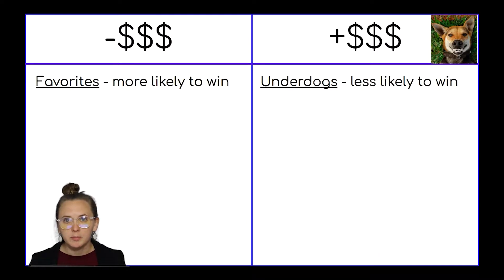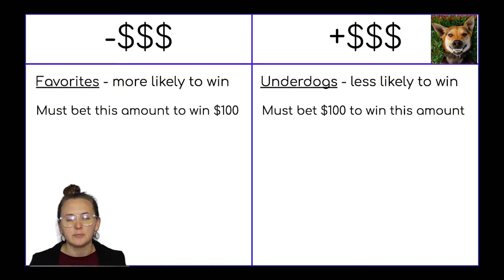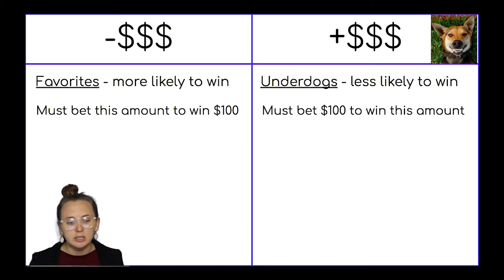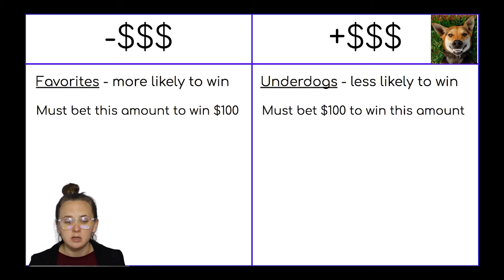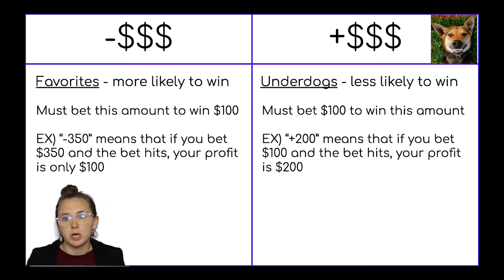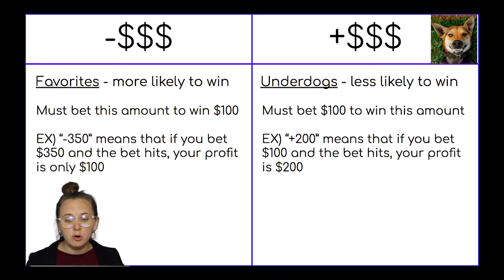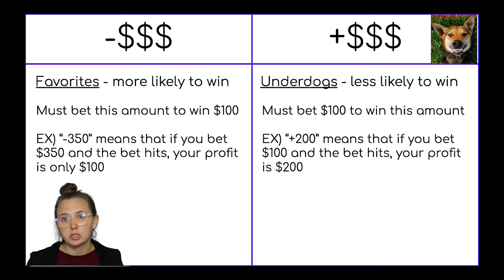If you have a negative betting line, that means you have to bet that amount to win $100. Whereas if you have a positive betting line, you have to bet $100 to win that amount. So for example, if a betting line is minus $350, that means if you bet $350, you will only profit $100. Whereas if the betting line is plus $200, that means if you bet $100, your profit is $200.